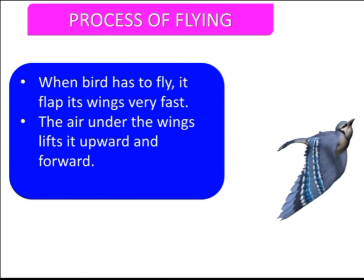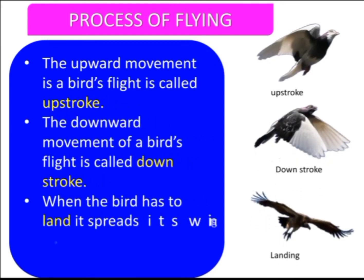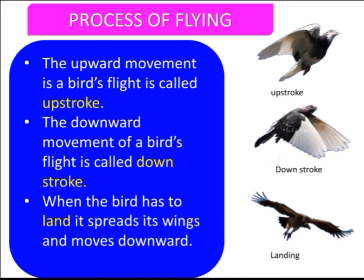As you can see in this picture, the air under the wings lifts the bird upward and forward. The upward movement of a bird's flight is called the upstroke, and the downward movement is called the downstroke. Whenever a bird wants to land, it spreads its wings and moves downward.